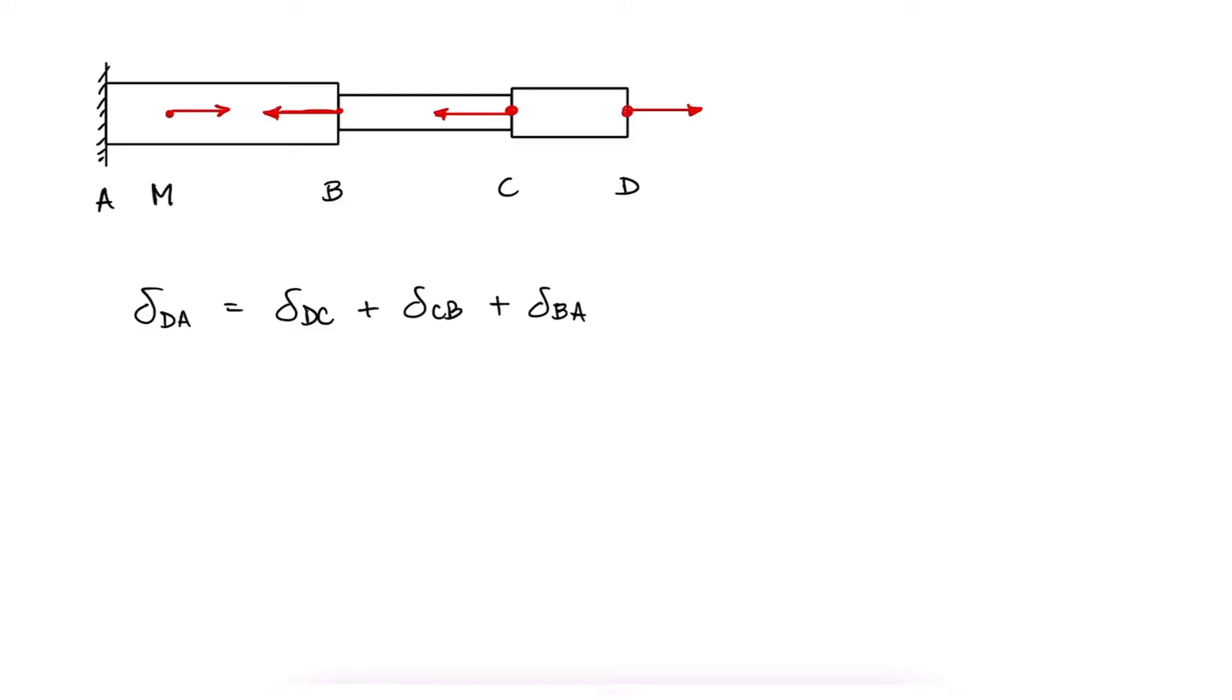The internal force in sections AM and MB are gonna be different, making the variables within the expression of delta BM and those of the expression delta MA not the same. And again, you'll see how this is useful with the examples we'll go over in this and the linked videos below.